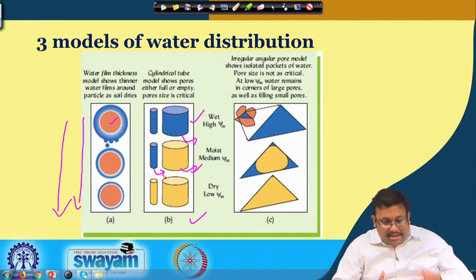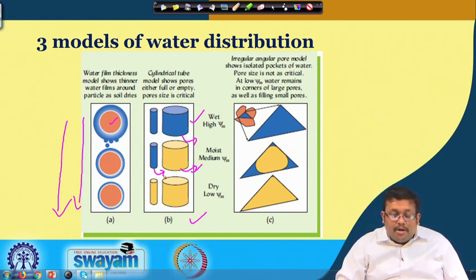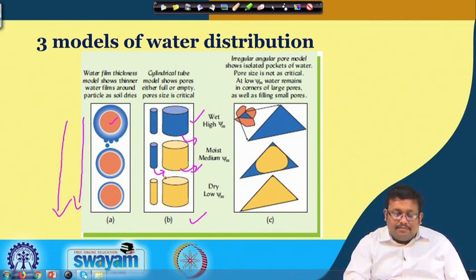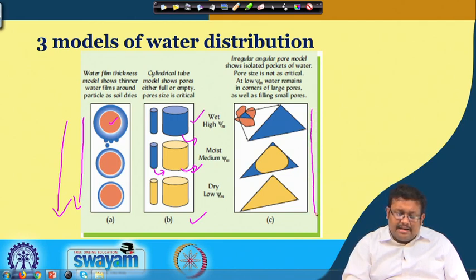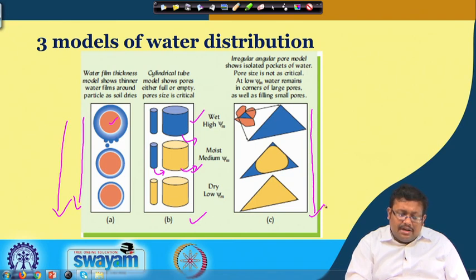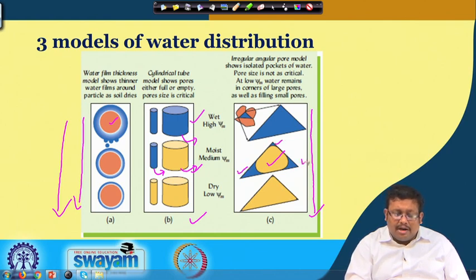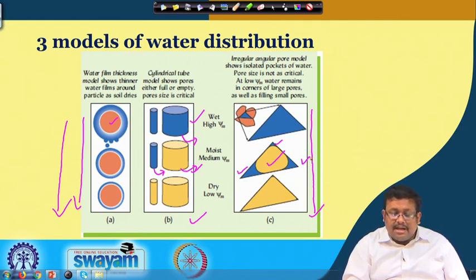The final model is called the irregular angular pore model and it shows irregular isolated pockets of water. These are angular-shaped pores and if you start drying the soil, the water will first evaporate from the middle portion while the three corners hold the water with higher tenacity. As we further dry the water from these triangular pores, most of the water will evaporate.